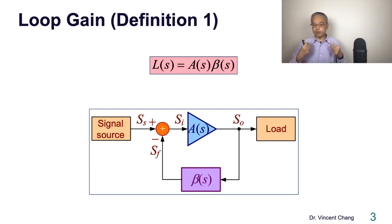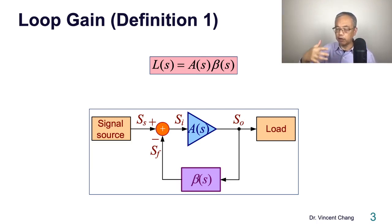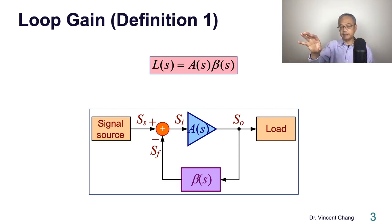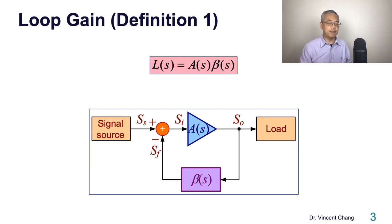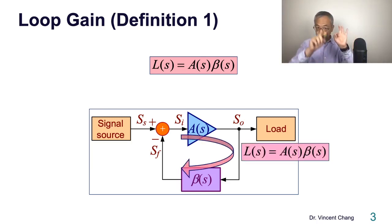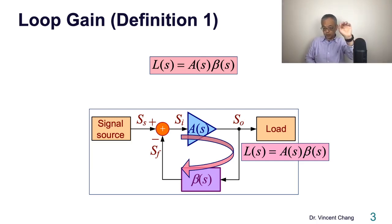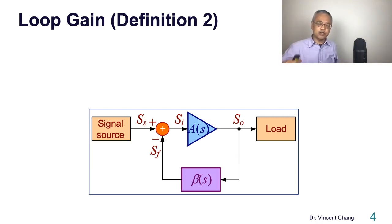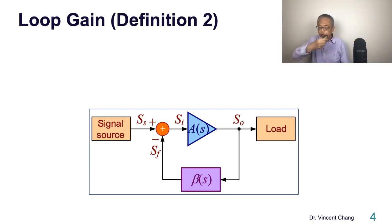Personally, I prefer to use this first definition when it comes to evaluating the stability of a feedback amplifier — to examine if the feedback amplifier is stable or not. On the other hand, this first definition of loop gain A times beta excludes the negative sign at the mixer. When it comes to the sinusoidal oscillator, I prefer to use the second definition for the loop gain, which will include the negative sign.